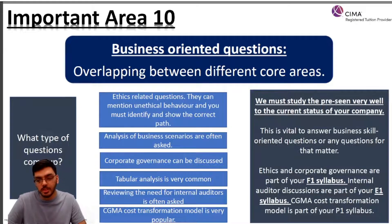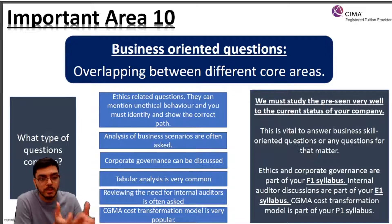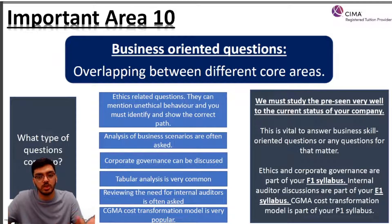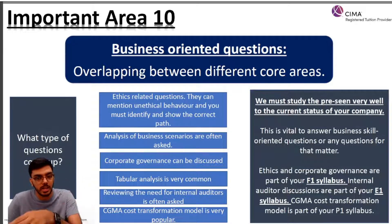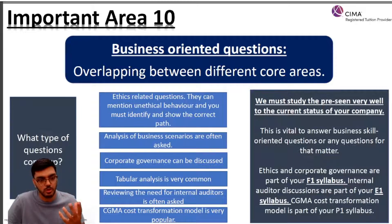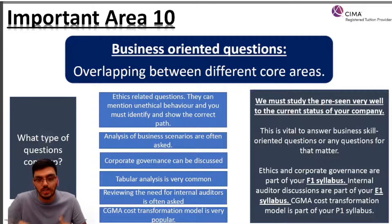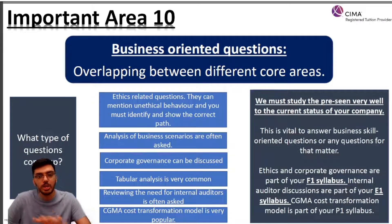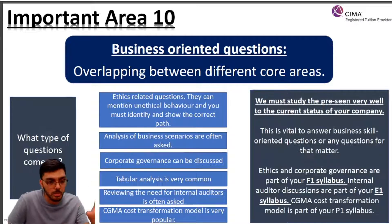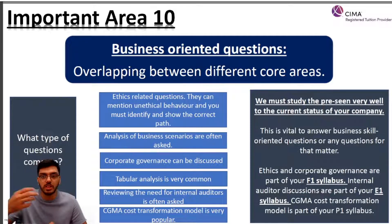Topic number ten is business-oriented questions. This exam tests your business skills and problem-solving techniques — not everything comes from E1, P1, and F1. Important business-related areas include ethics: they can mention unethical behavior that has been carried out and ask you to identify and show the correct path. For this, the CIMA Code of Ethics from your F1 syllabus is absolutely vital. They can also come up with corporate governance issues and ask how corporate governance can be improved.